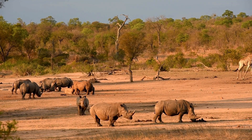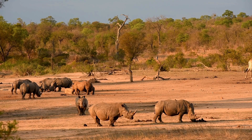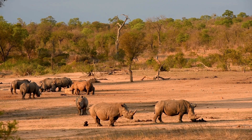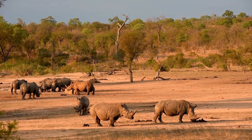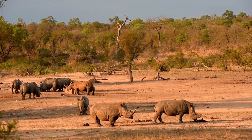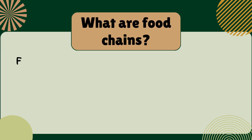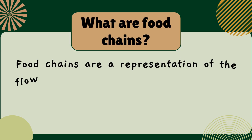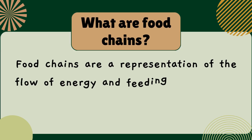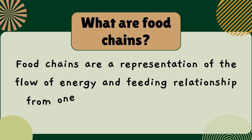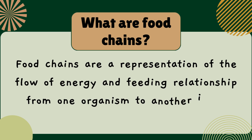Now let's study this feeding relationship between living organisms. What are food chains? Food chains are a representation of the flow of energy and feeding relationships from one organism to another in an ecosystem.